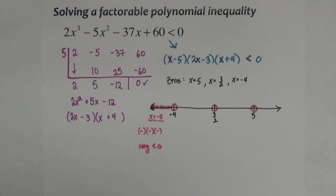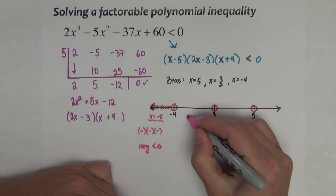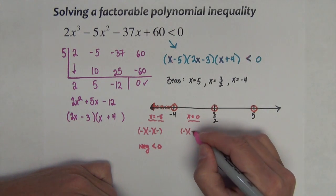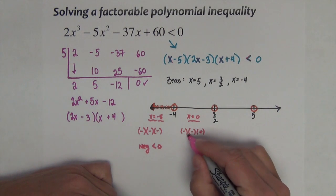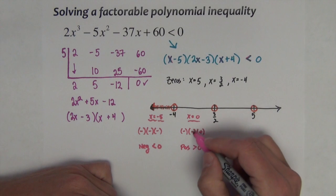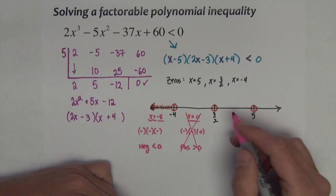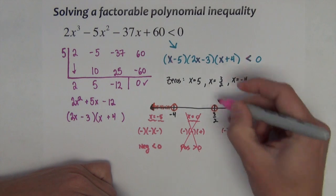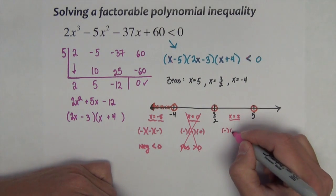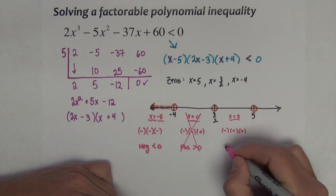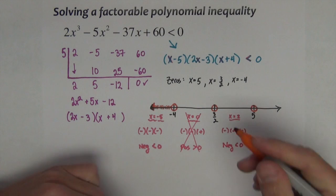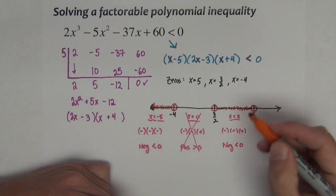Similarly, I'm going to pick numbers in between each of these values. Here I might pick x = 0. 0 minus 5 is negative, 0 minus 3 is negative, 0 plus 4 is positive. Two negatives times a positive comes out positive. Positive numbers are bigger than 0. I want less than 0 things, so we're not going to shade any of that. I'll pick a number between 3/2 and 5, maybe 2. 2 minus 5 is negative, 2 times 2 is 4 minus 3 is positive, 2 plus 4 is positive. A negative times two positives is negative. Negative numbers are less than 0, so we're going to shade this part of the number line.